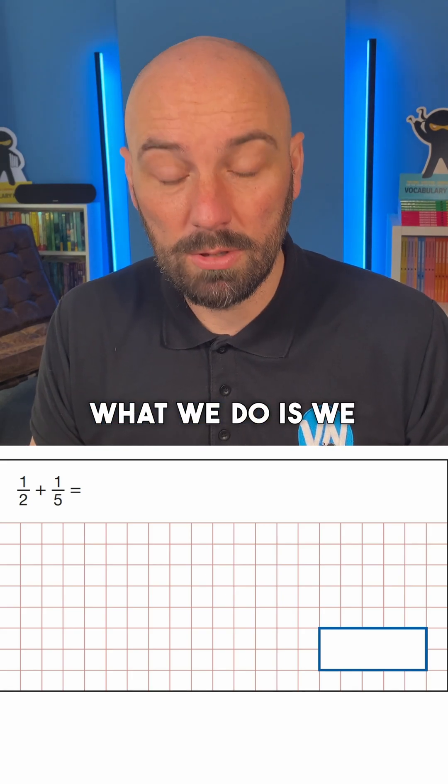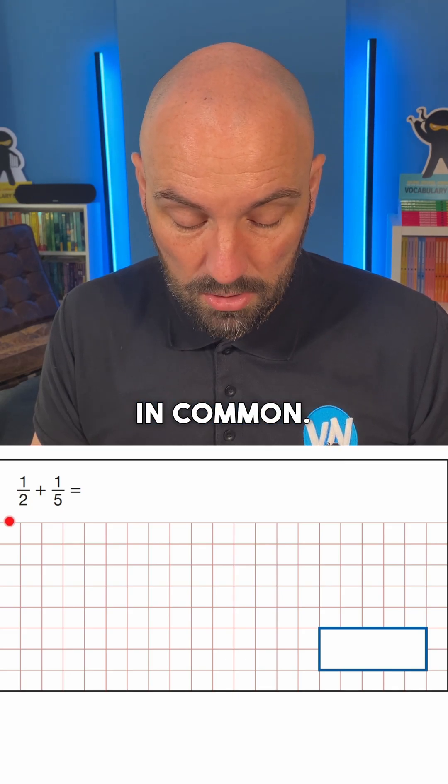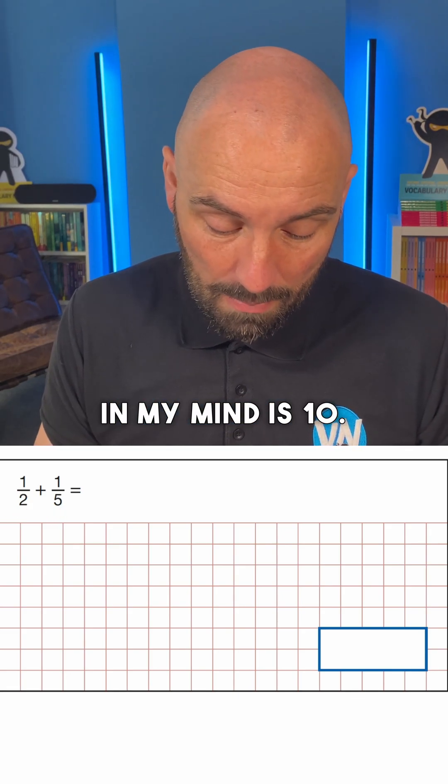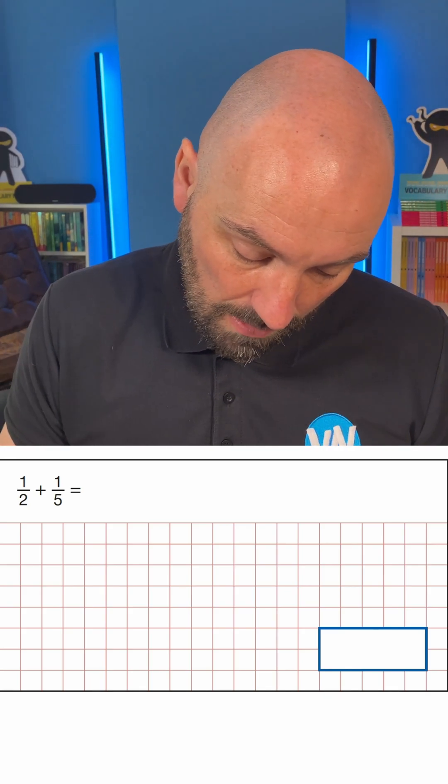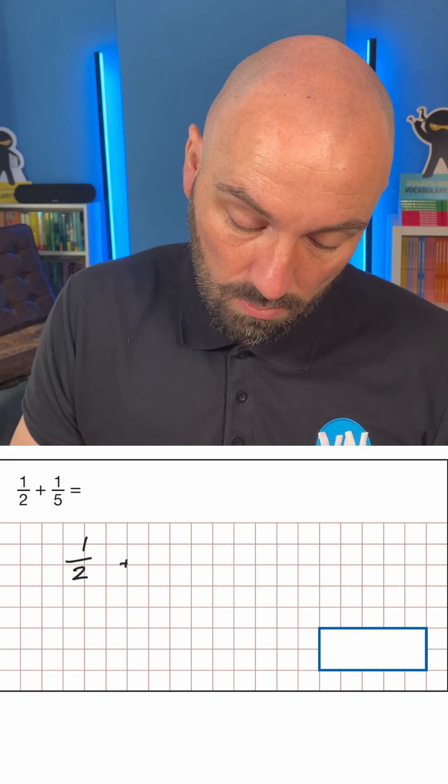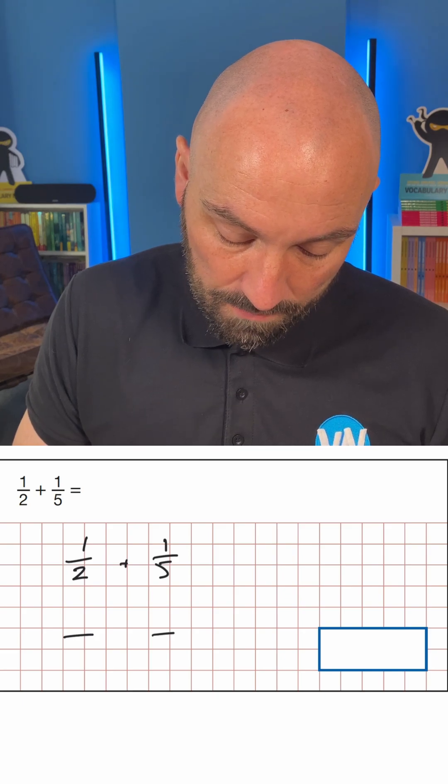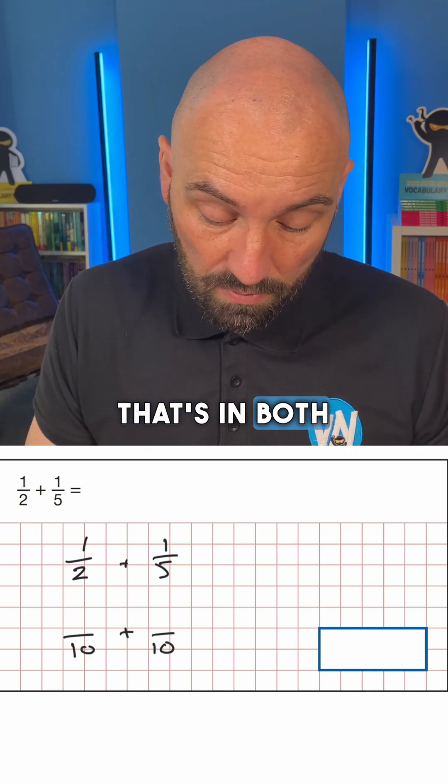And normally what we do is we look to those times tables to find a number in common. So in the 2 times table and the 5 times table, the common number in my mind is 10. So for me we would write this question out to start with. We'd have 1 over 2 add 1 over 5. And I'd be looking to rewrite the question with the denominator that I prefer that's in both of their times tables.